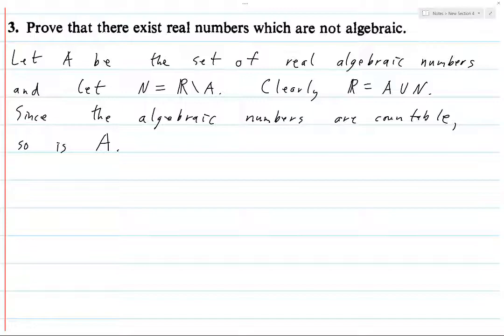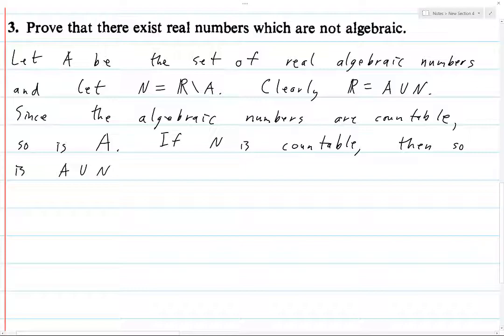Okay. If N is countable, then so is A union N. Because if you take the union of countable sets, countable union of countable sets is countable. So, in particular, taking the union of A with N. So if N is countable, then so is A union N.